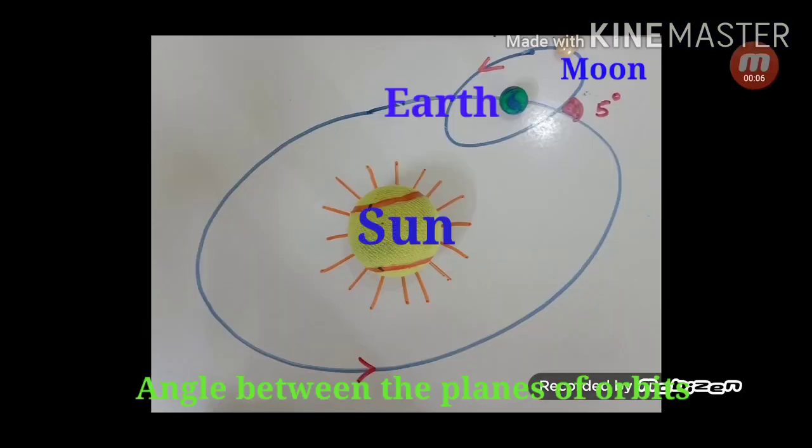The orbital path of the Earth and that of the Moon are not in the same plane. The Moon's revolutionary orbit makes an angle of 5 degrees with that of the Earth.